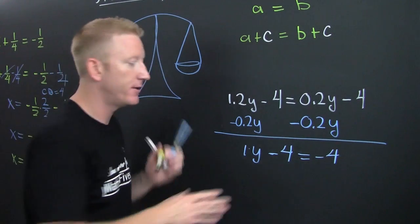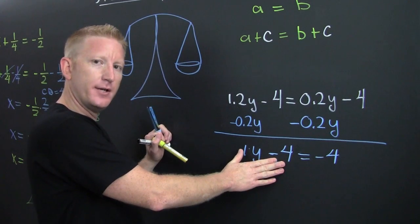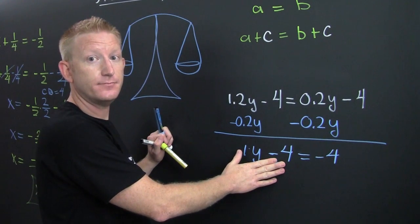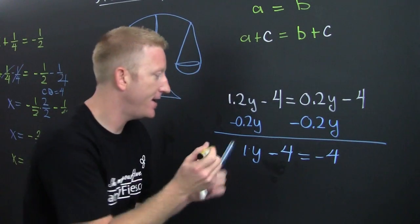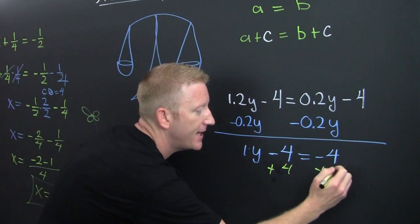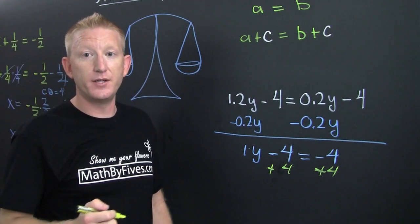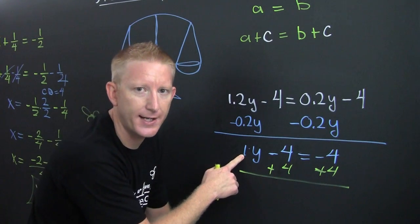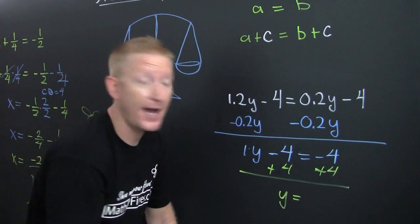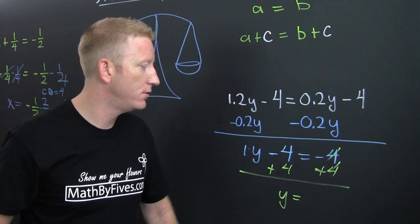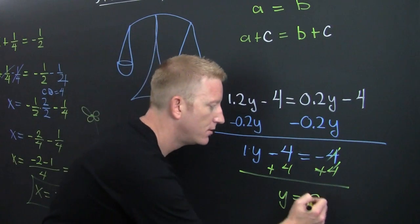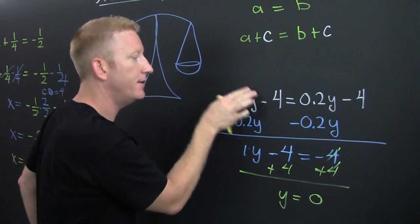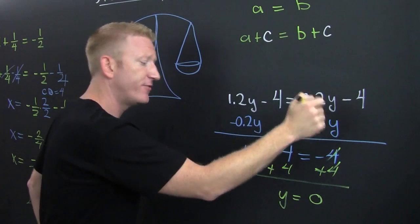Now I need to use the additive property once more to get rid of that minus four. The additive inverse of minus four is positive four — because that's the number that when added to minus four gives zero. So I add four to both sides: y plus zero equals zero, so y equals zero. Check it — throw it back in: zero minus four equals zero minus four. Minus four equals minus four. Check!